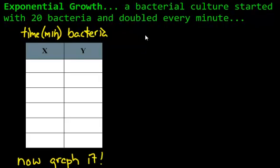So let's read together. A bacterial culture started with 20 bacteria and doubled every minute. Over here I've set up a table of values and at the top of x we're going to talk about the time, and the y values are going to be the bacteria or the number of bacteria. So at the very beginning, before there was any time, we had 20 bacteria.